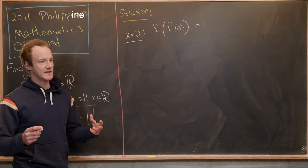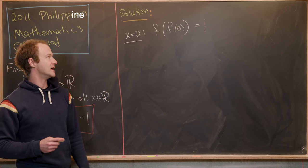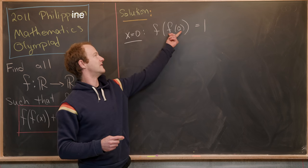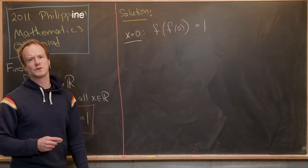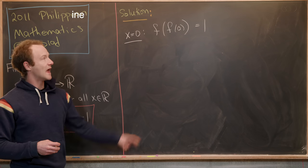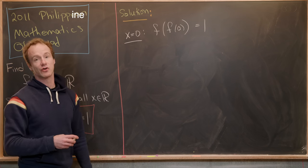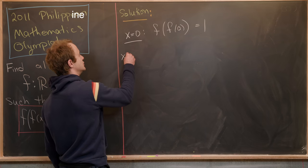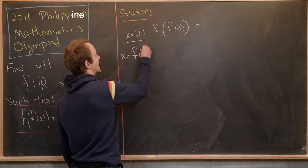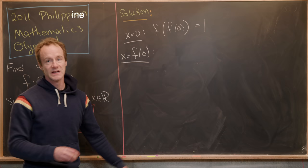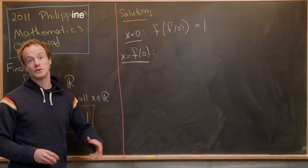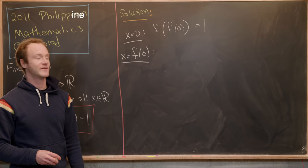Now it's not really that helpful of a value at the moment because we know f evaluated at f(0) equals 1. But at least it's a start. And this gives us actually a great hint that our next substitution should be x equals f(0). Since we know how to decompose repeated applications of f on the number 0.